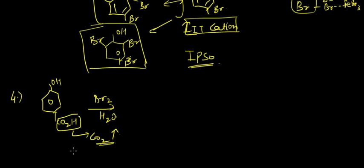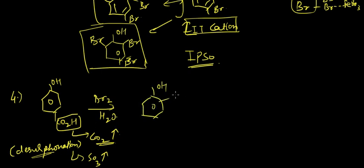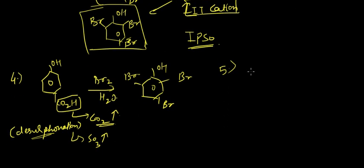...the evolution of SO3 gas in case of desulfonation - that was also an example of ipso substitution. Now we will get the same compound irrespective of whether the CO2H group was on ortho or para.